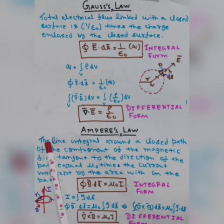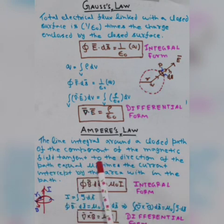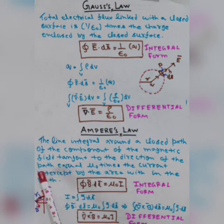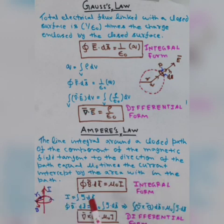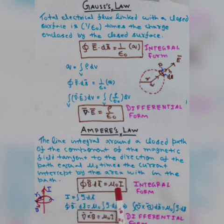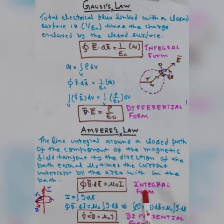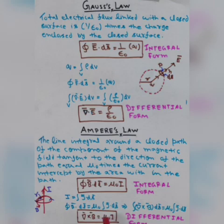In Ampere law, the line integration around a closed path of the component of the magnetic field tangent to the direction of the path — here the magnetic field is always tangent to this closed path — is equal to mu naught times the current intercepted by the area. This current always intercepts this closed path. So the line integration of the magnetic field is equal to mu naught times current. This is the integral form of Ampere law. We can convert it with the help of Stokes theorem into the differential form: del cross B is equal to mu naught J.